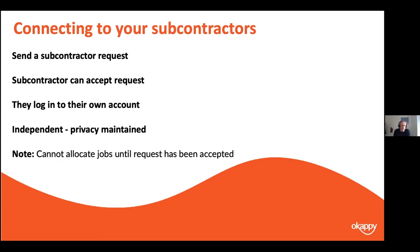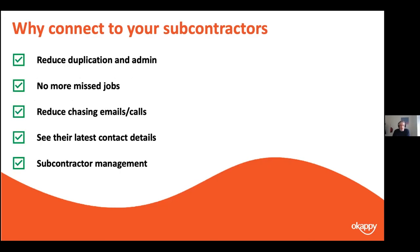One important difference between subcontractors and customers: customers don't necessarily have to connect, but with a subcontractor, they must accept the invitation before you can assign jobs to them. This is because you don't want to assign work to a subcontractor who isn't using the system — the job wouldn't get done and your customer would be irate. The benefits are very similar: reduced duplication, no more missed jobs, less chasing. You can see that the subcontractor is on site, see what they've done, and if they update their contact details, you see that in real time.